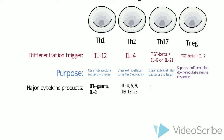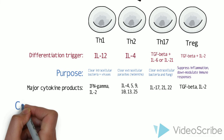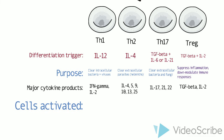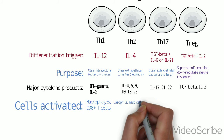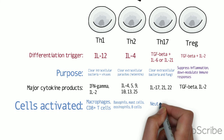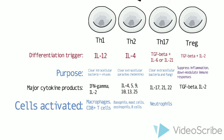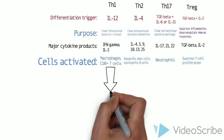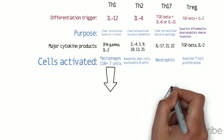Each type of T helper cell has a few major cytokine products, which are used to signal the activation of different types of immune cells. Th1 cells activate macrophages and CD8+ T cells. Th2 activate eosinophils, mast cells, and B cells. Th17 activate neutrophils, and Treg gets its name from regulating the other T helper cells.